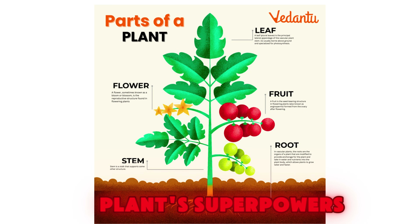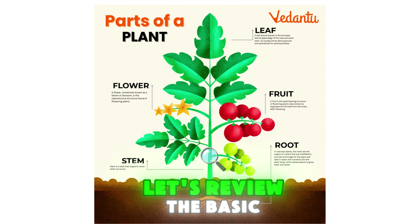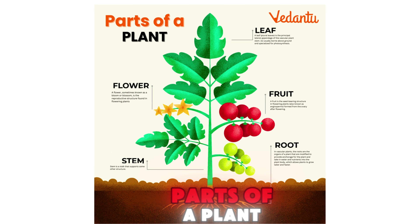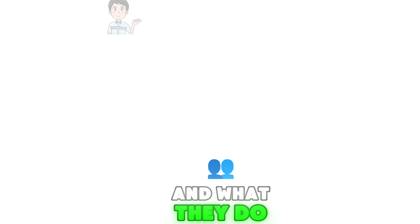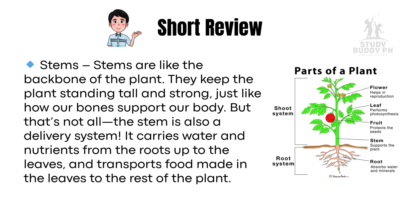Before we talk about the plant's superpowers, let's review the basic parts of a plant and what they do. Stems are like the backbone of the plant. They keep the plant standing tall and strong, just like how our bones support our body. The stem is also a delivery system — it carries water and nutrients from the roots up to the leaves and transports food made in the leaves to the rest of the plant.